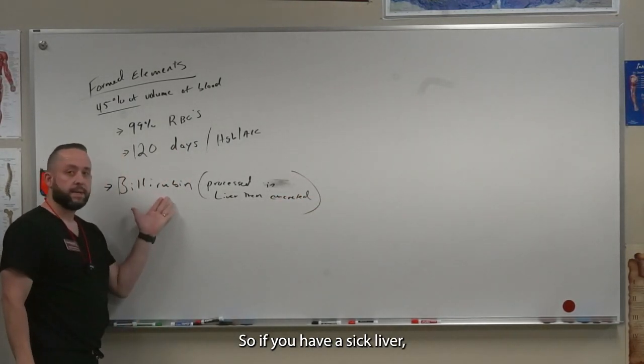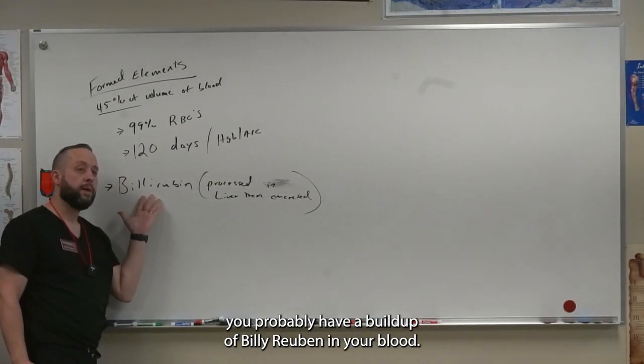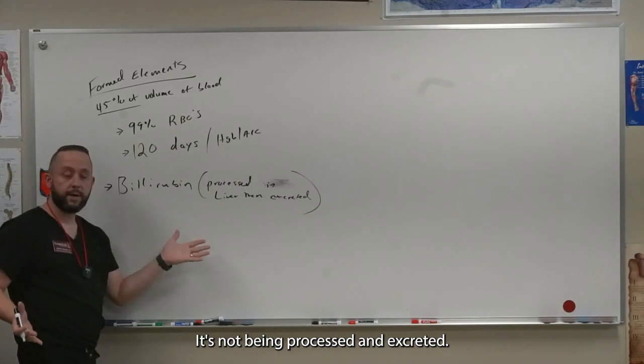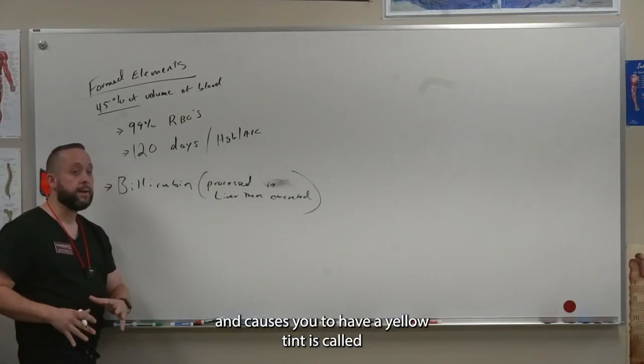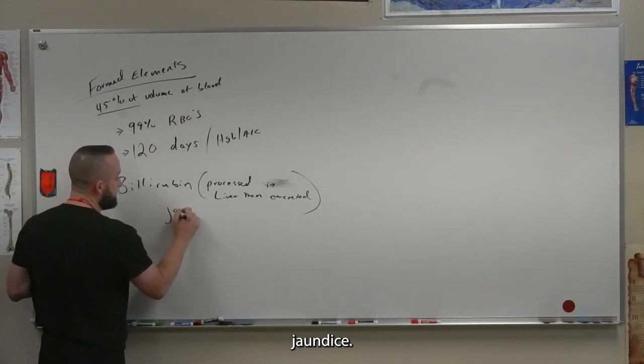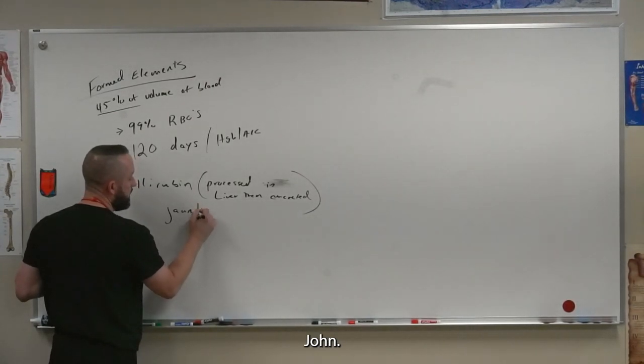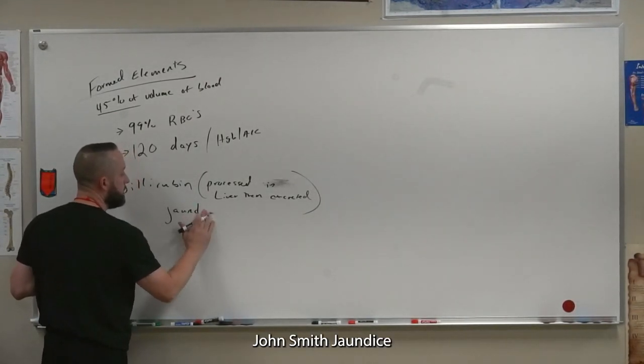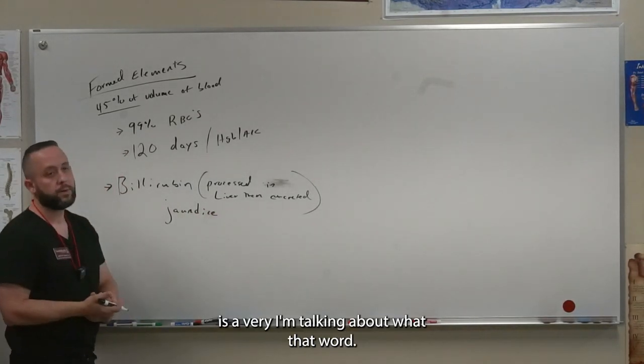So if you have a sick liver, you probably have a buildup of bilirubin in your blood. It's not being processed and excreted. That condition where bilirubin builds up in your skin and causes you to have a yellow tint is called jaundice. Does everybody know what I'm talking about with that word?